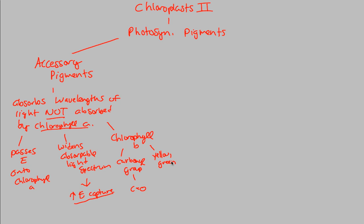So going back to our idea of accessory pigments — Chlorophyll B is yellowish green and helps out Chlorophyll A because it widens the spectrum. We now have yellow in the spectrum that we didn't have before. In addition to that, we have carotenoids.